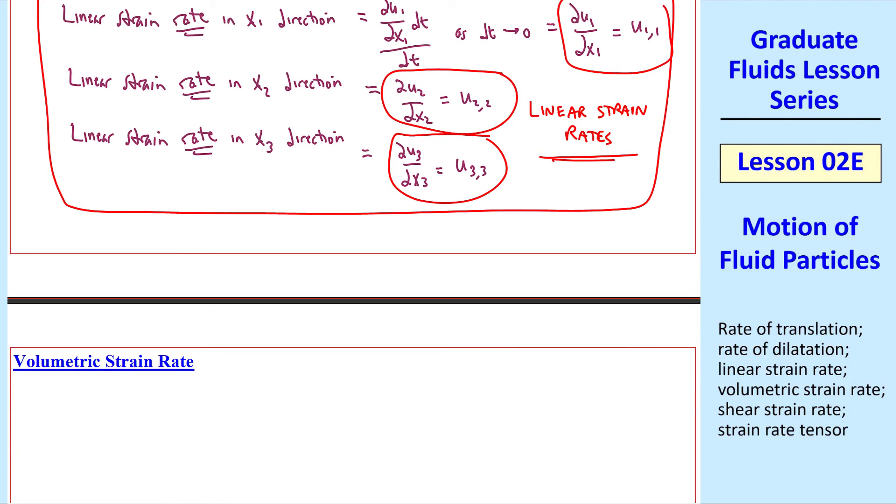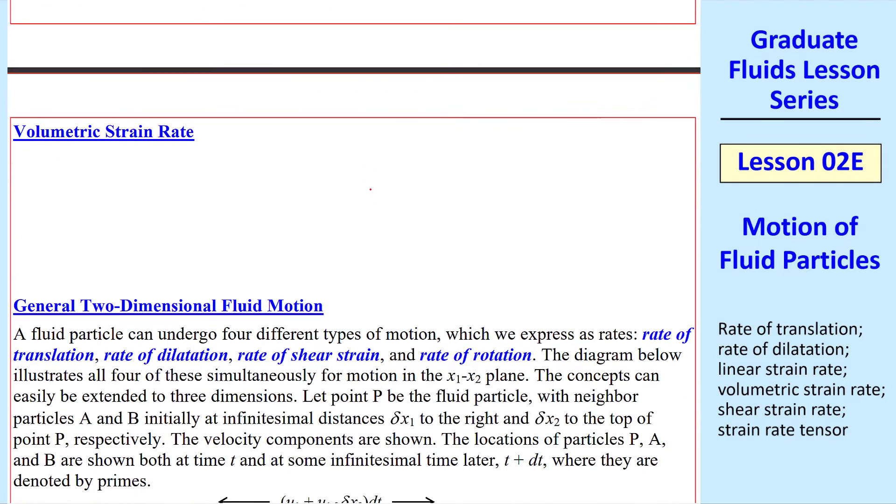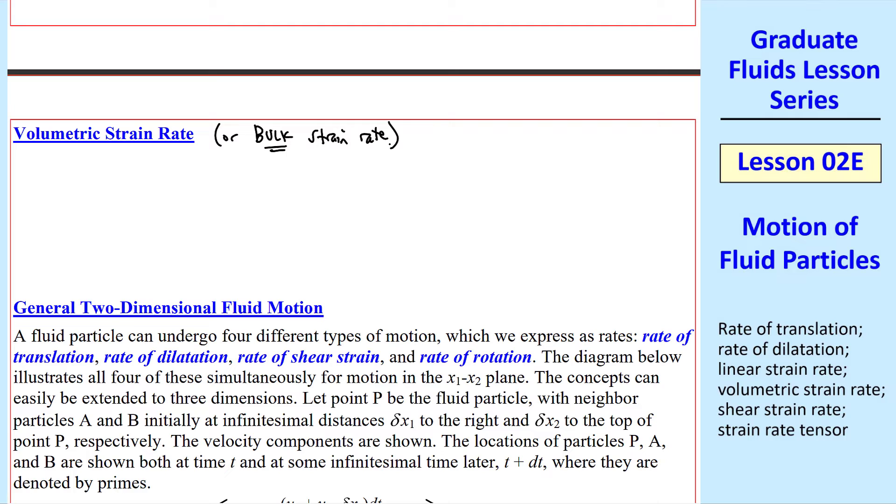We also define a volumetric strain rate, which is a kind of three-dimensional version of these linear strain rates. We also call this a bulk strain rate. We define this as the rate of volume increase of a fluid particle per unit volume.